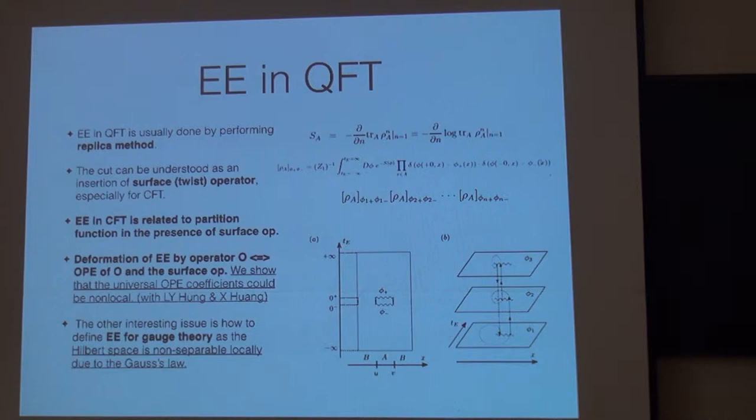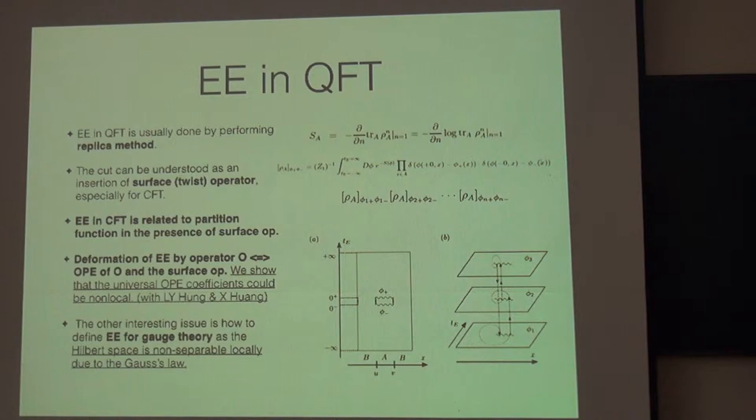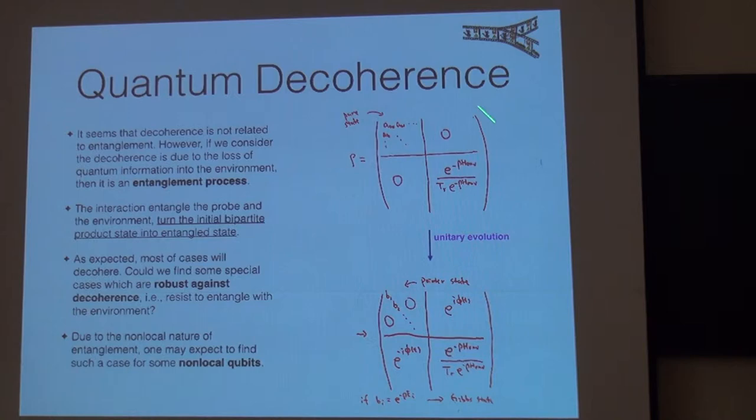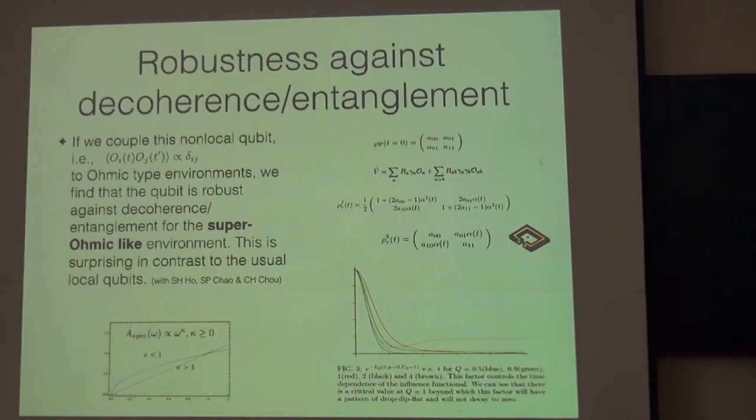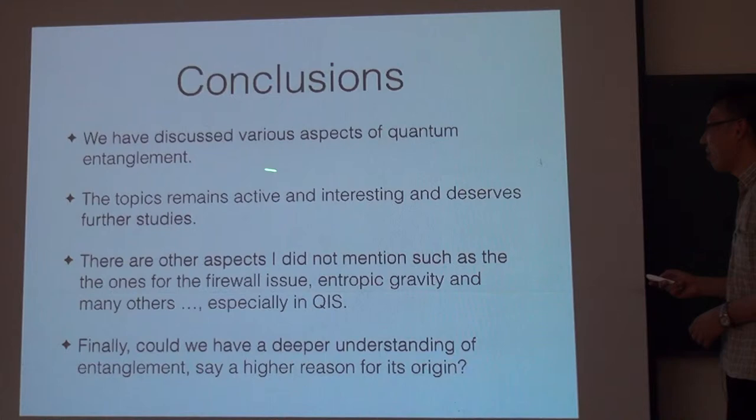So actually, I just want to say that using entanglement entropy and then go back to study your quantum field theory, you will find something new as we find here. Actually, we calculate the universal coefficient of this OPE and then we find that it cannot be expressed in terms of local quantity. So it means that the use of OPE for surface operator should be modified. So, probably I should skip this part. And then go to conclusion.